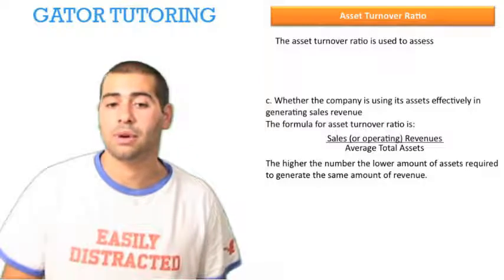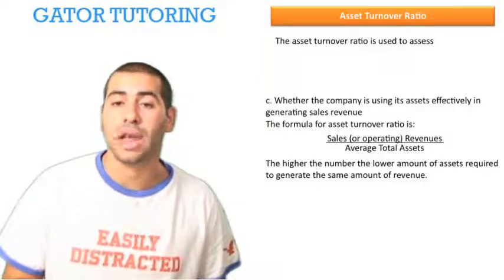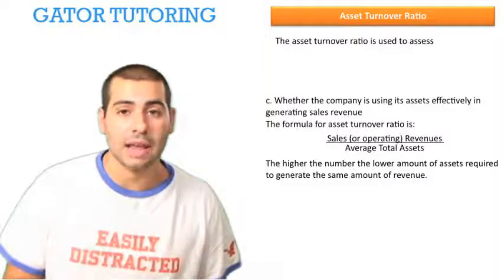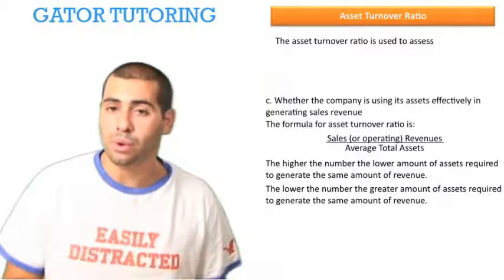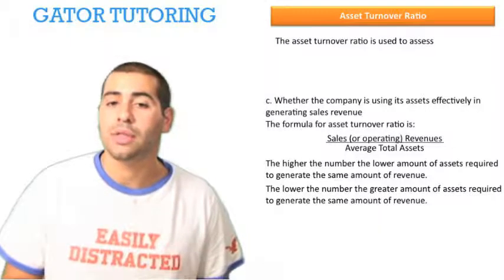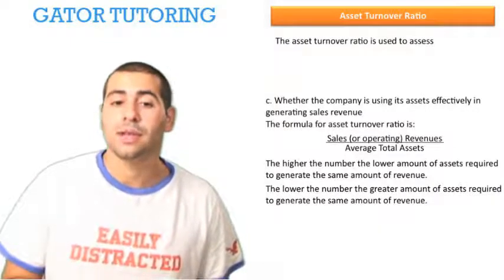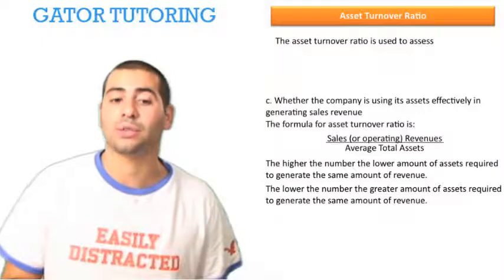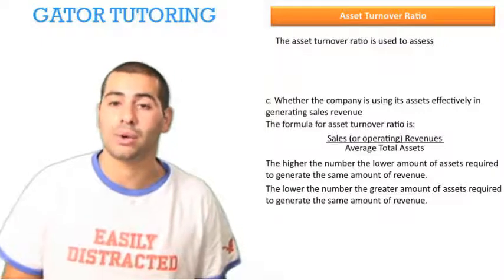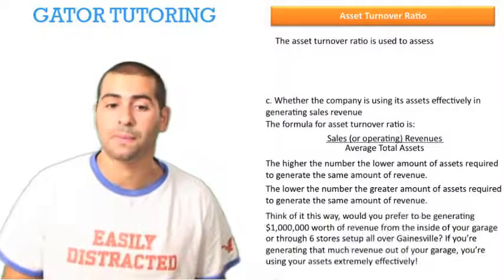The higher the number, the lower the amount of assets required to generate the same amount of revenue. The lower the ratio, the greater amount of assets required to generate the same amount of revenue.